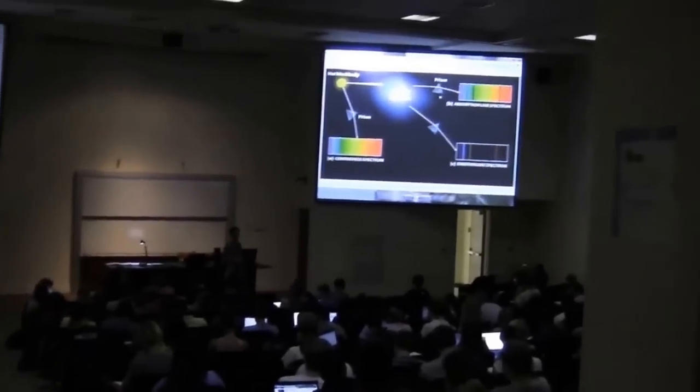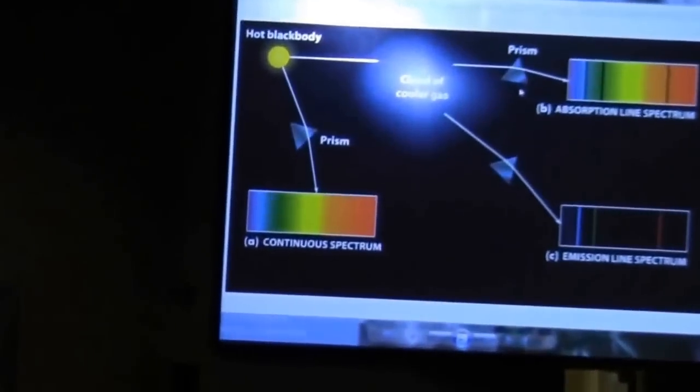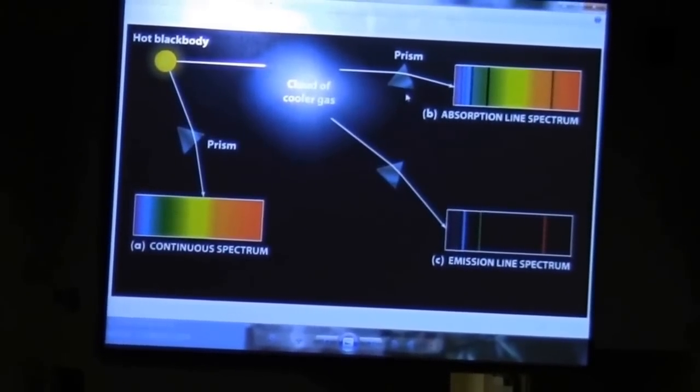We'll explain how it works in lesson four when we talk about telescopes and instruments. Until then you can just accept it. We experienced yesterday something that disperses the light and you can see the component colors.